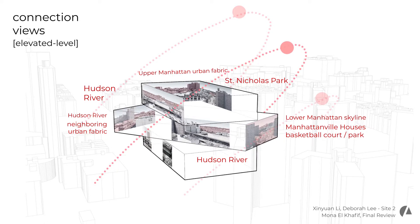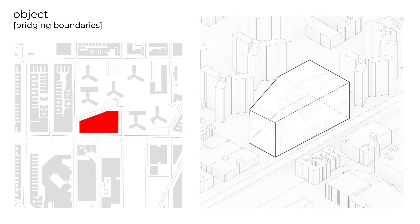We also looked into potential viewing spots to create connection at the elevated level, such as connection to the Hudson River, a glimpse to St. Nicholas Park, and the lower Manhattan skyline. We also noted how Site 2 sits on where object and fabric buildings meet.